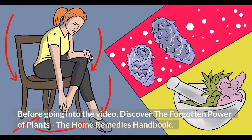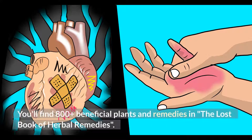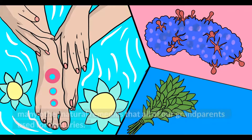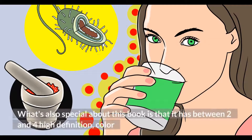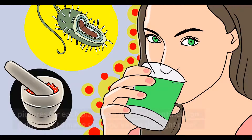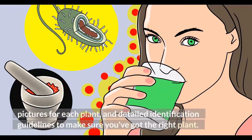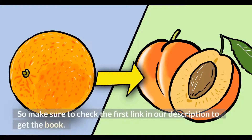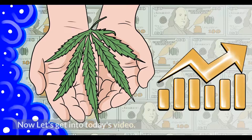Before going into the video, discover the forgotten power of plants — the Home Remedies Handbook. You'll find 800 plus beneficial plants and remedies in the Lost Book of Herbal Remedies. It includes recipes of tinctures, teas, decoctions, essential oils, syrups, salves, poultices, infusions, and many other natural remedies that all of our grandparents used for centuries. It has between two and four high definition color pictures for each plant, and detailed identification guidelines to make sure you've got the right plant. Check the first link in our description to get the book.